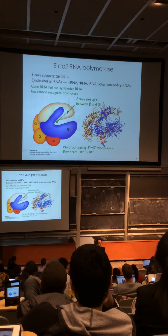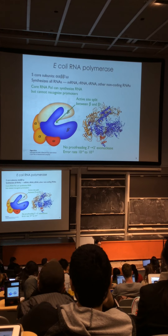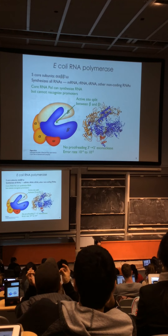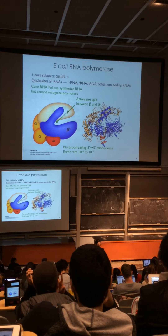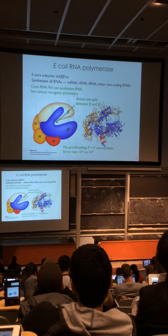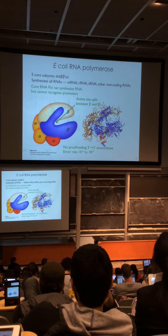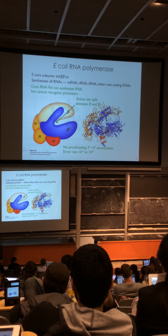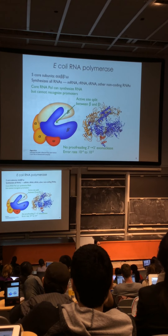The enzyme responsible in E. coli is E. coli RNA polymerase, which has five core subunits—five distinct proteins. It synthesizes all RNAs produced in E. coli: mRNA, rRNA, tRNA, and other non-coding RNAs. The only RNA synthesis in E. coli not by RNA polymerase is primase activity during DNA synthesis, but those RNA primers are quickly degraded. So E. coli RNA polymerase synthesizes all stable RNA you would isolate from E. coli.